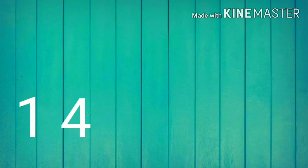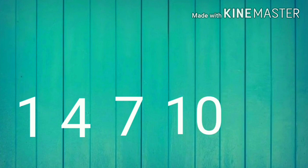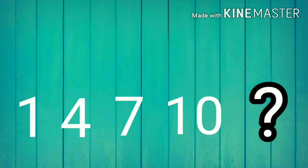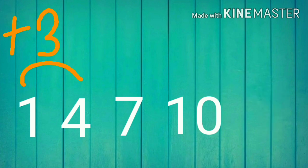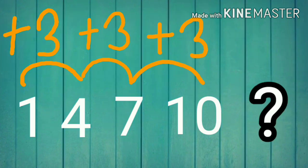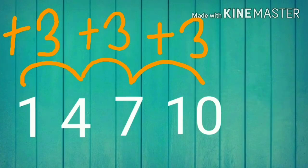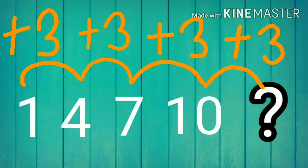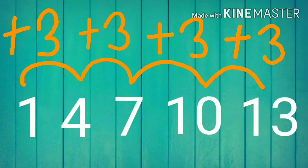Now next pattern. One, four, seven, ten. Observe the pattern carefully: one plus three is four, four plus three is seven, seven plus three is ten. Now what will come next? Ten plus three — thirteen. Yes, good!